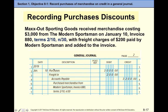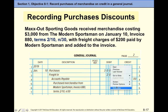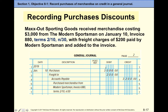Here is an example: January 10th we make a purchase plus freight totaling $3,200 with terms 2/10. Add 10 days — January 20th is the last day to get the discount. The 2% applies only on $3,000 (not the full $3,200). To calculate: 1% of $3,000 is $30, double it — that's $60. So the discount is $60, not $64.